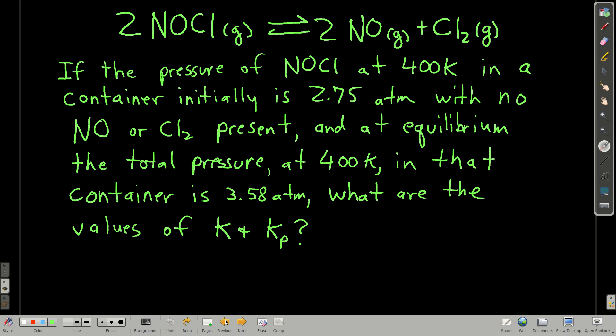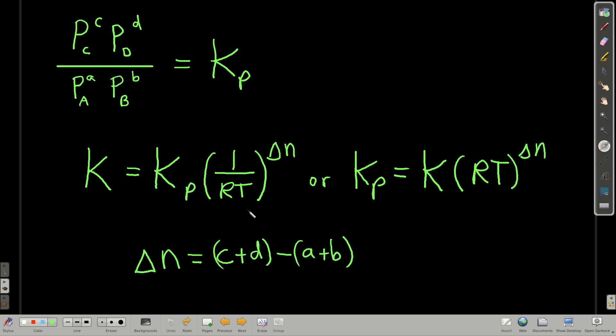Or if we rearrange this, we can say Kp is equal to K times RT to the delta n, where again delta n is the sum of the coefficients of the gaseous products minus the sums of the coefficients of the gaseous reactants, c plus d minus a plus b. So these are useful. Remember them.